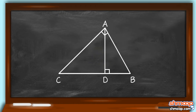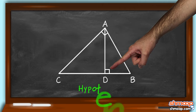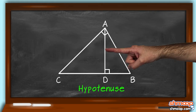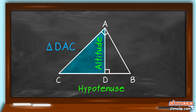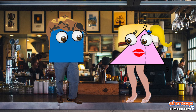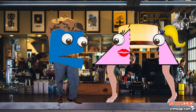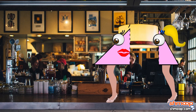Her height is the length from point A, where her 90-degree angle is, to her hypotenuse at point D. This line, called the altitude, splits her into two smaller right triangles. Knowing that, there's a possibility that ABC is really two baby triangles in a cocktail dress.